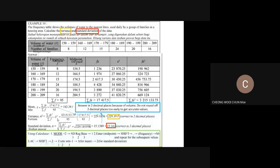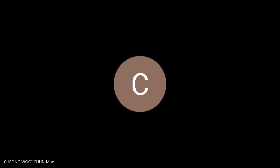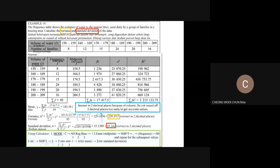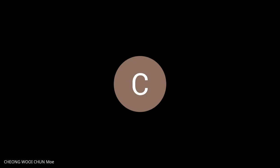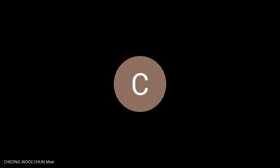Before finding the variance, find the mean first. The mean is sum of fx over sum of f. For grouped data we add f in front. So sum of fx is 17,417.5 divided by sum of f which is 95, giving a mean of 183.34 liters.